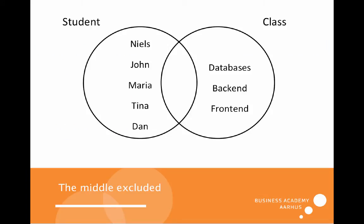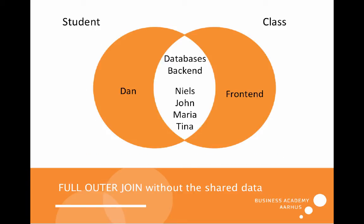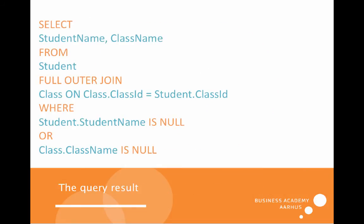And if we want to exclude the middle — that means I want to know where the nulls are, where the problems are — then I will know that Dan is a problem and frontend is a problem. The query uses a FULL OUTER JOIN, and we subtract those who don't have any classes and those classes that don't have any students. We use OR here because we want both. If we used AND there would be no result at all.